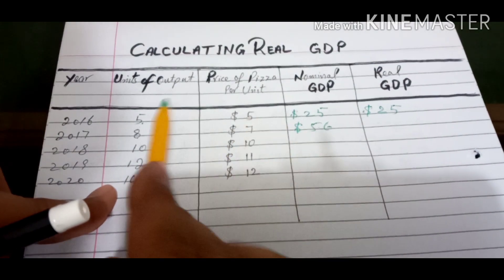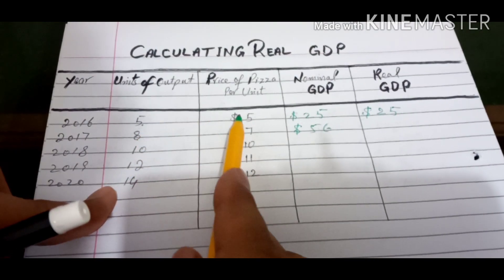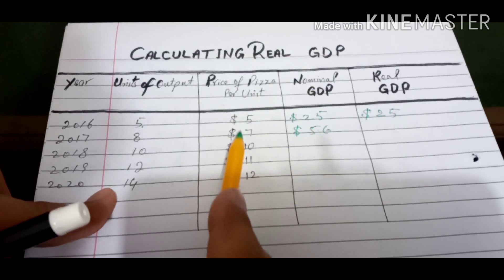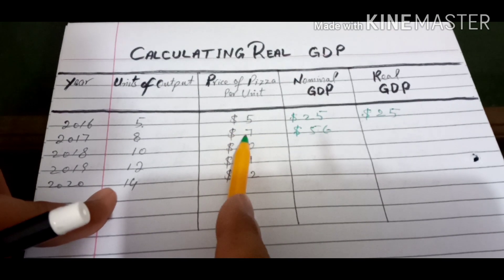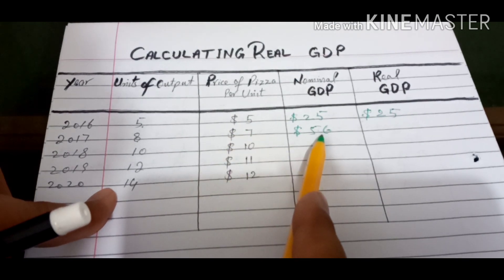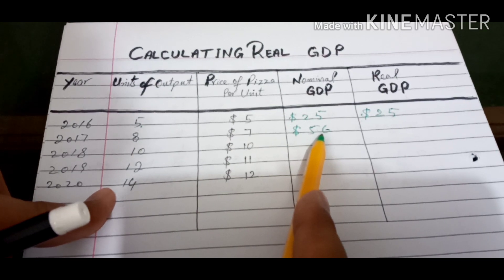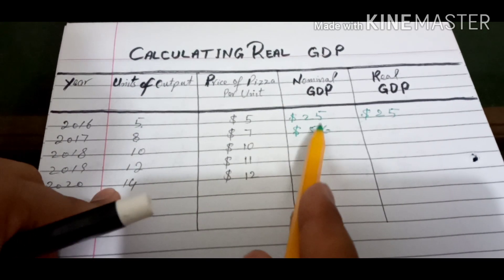Inflation is included because in 2016 the price of pizza was $5 and now it is $7. So the big price also is the nominal GDP. Now how to calculate real GDP?